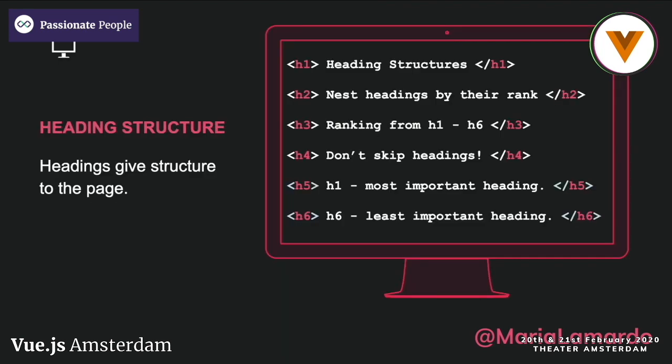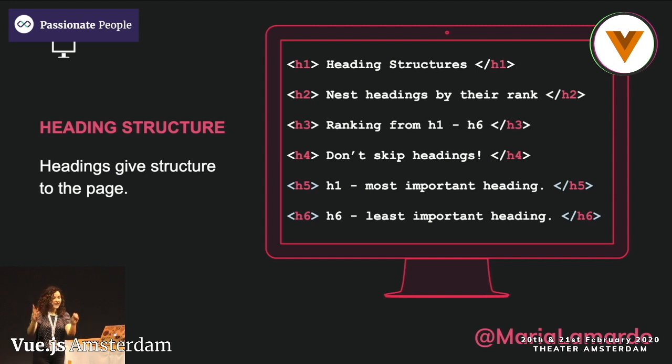Another thing you should pay attention to is your heading structure. A lot of assistive technology is able to navigate your application by headings, so make sure that you're using headings correctly. You can start with H1, which is the most important, all the way down to H6. You want to make sure that you're not skipping any headings and that you can nest them by rank. For example, after your main heading, if you have two sibling sections in your site, both can start at H2, and then you can nest headings inside each of those.